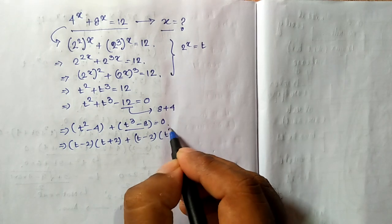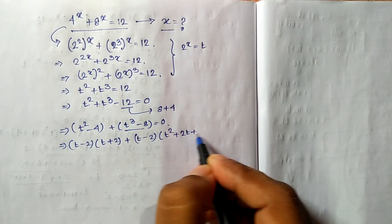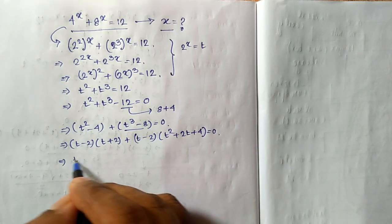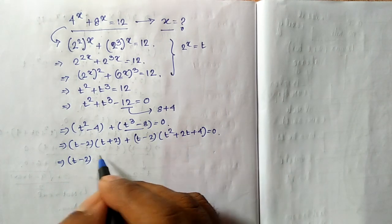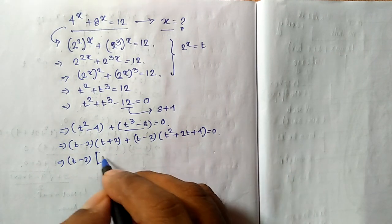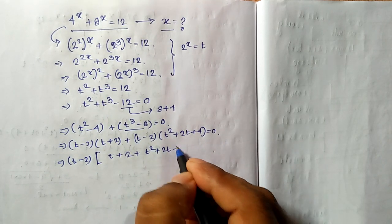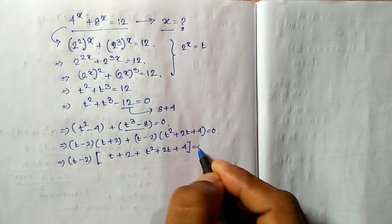I am writing it as t minus 2 into t squared plus 2t plus 4 equal to 0. If I take t minus 2 common from these two separate expressions, my other expression becomes t plus 2 plus t squared plus 2t plus 4 equal to 0.